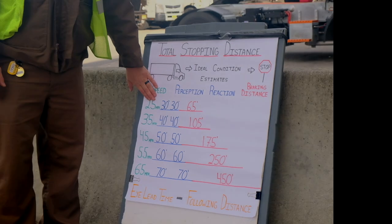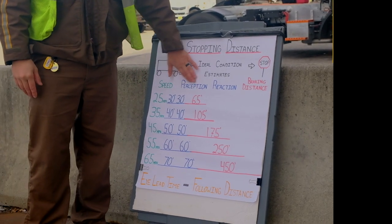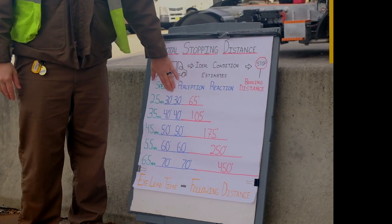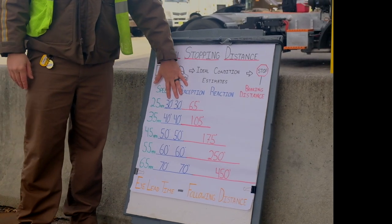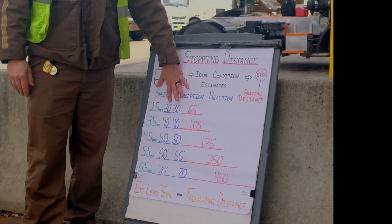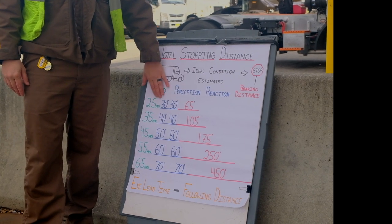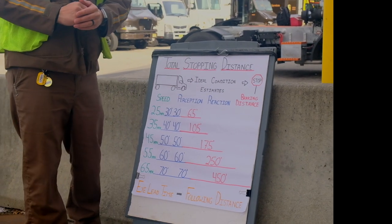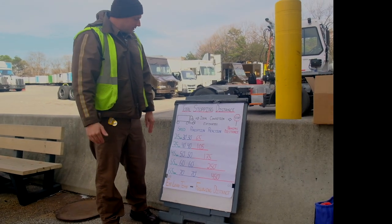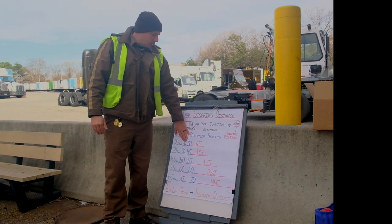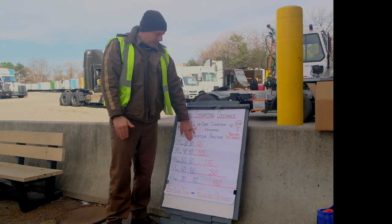You have your speed — we can control that. Speed versus time equals distance, so they got 30 feet. At 25 miles per hour, 30 feet will be your perception distance — you see something happening and your brain recognizes it. Your reaction is moving your foot to the brake pedal.